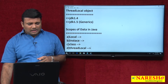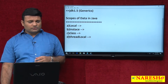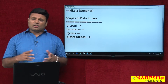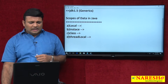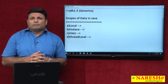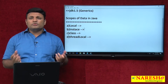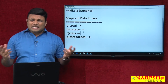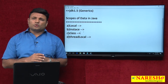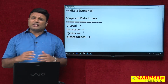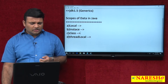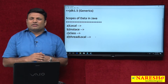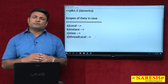To recap: in Java we can maintain data in 4 scopes. One is local scope — when you take an object as a local variable of a method. Instance scope — when you take an object as a non-static member variable of a class. Class scope — when you take a variable as a static variable of a class. And thread-local scope — specific to each thread. It is a new scope; it will not be used regularly, but in specific situations.